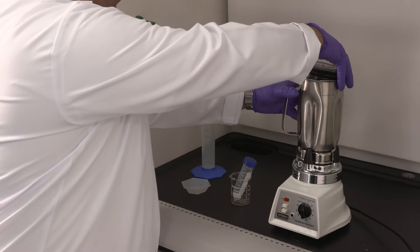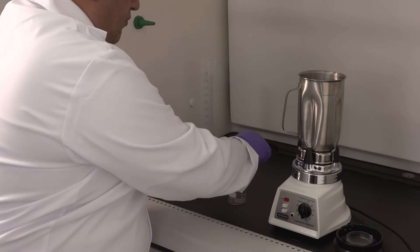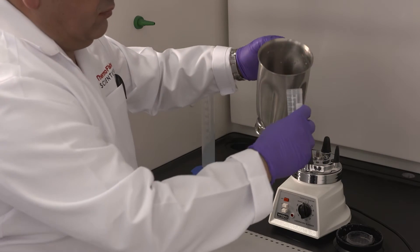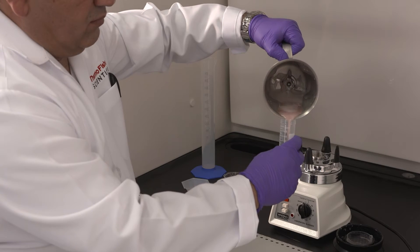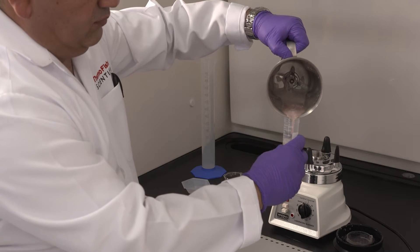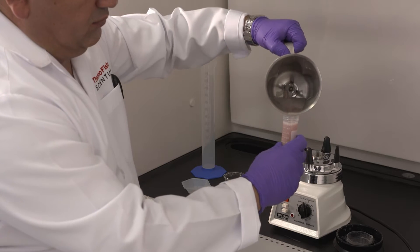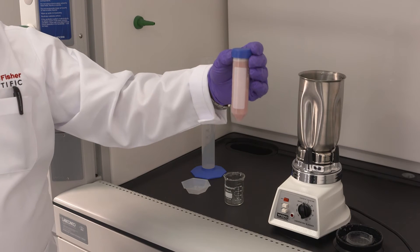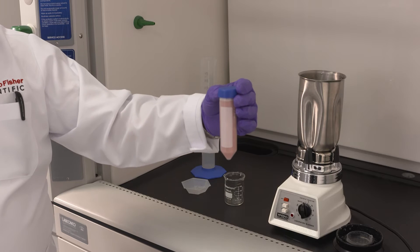After 2 minutes blending, the mixture will be transferred into a centrifuge tube so we can remove the debris from the mixture and use the supernatant to extract the protein. As you can see, the mixture is blended. There's still some particles but it's normal. Now we'll go to the next step where we will centrifuge this mixture.